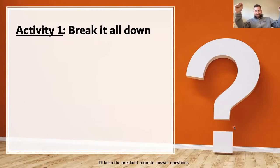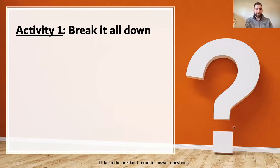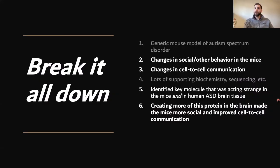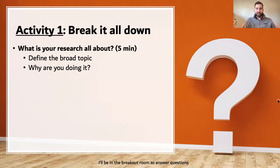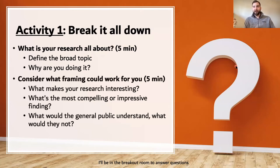Welcome to Activity One: break it all down. This is an individual activity. Ask yourself — take about five to ten minutes — what is your research all about? Define the broad topic. Why are you doing it? What's the rationale? What's the impact? Consider what framing could work for you: what makes it interesting? What's the most compelling or impressive finding? And what would the general public understand, and what would they not?